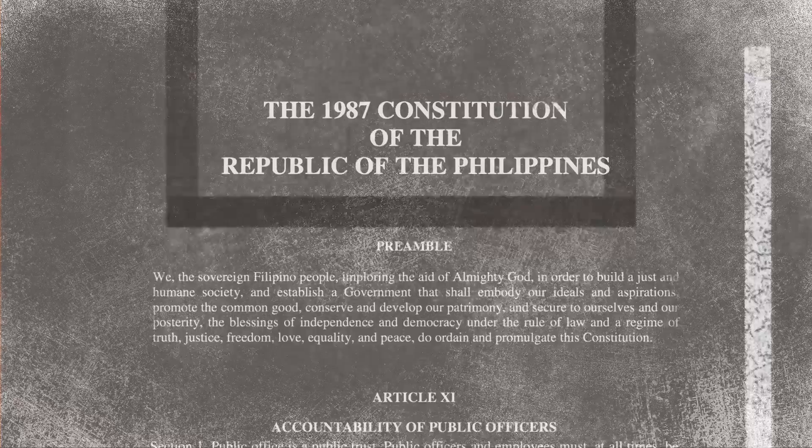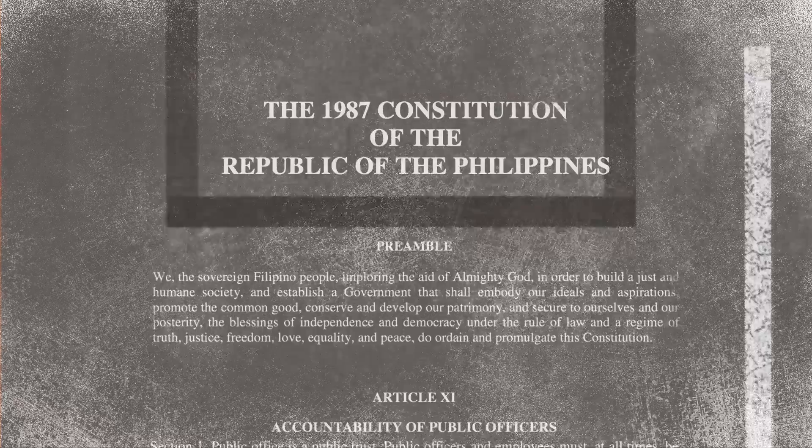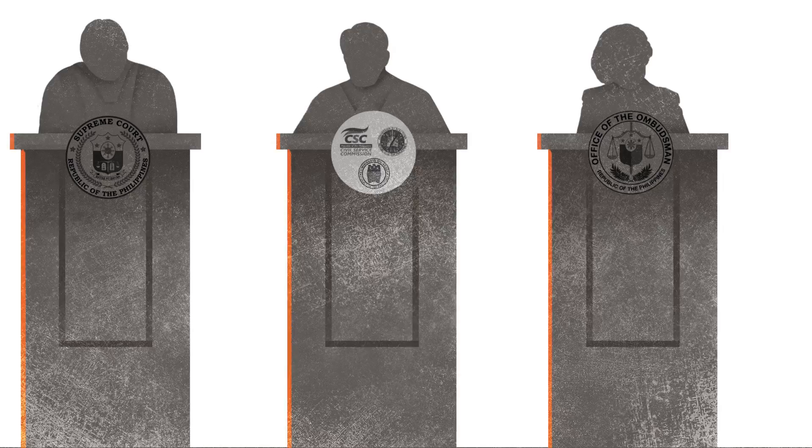According to the 1987 Constitution, the President, the Vice President, members of the Supreme Court, members of constitutional commissions, and the Ombudsman may be removed only via impeachment.